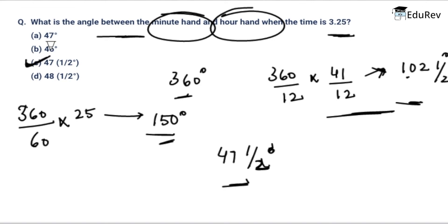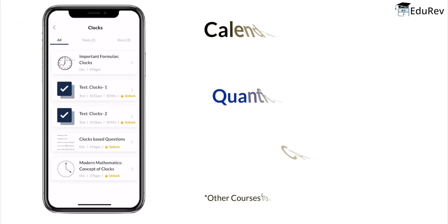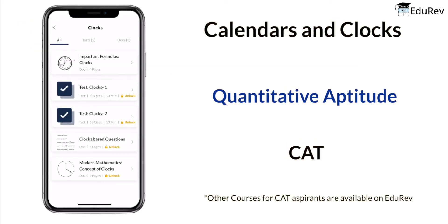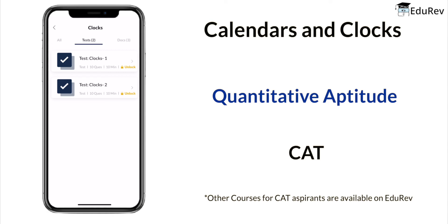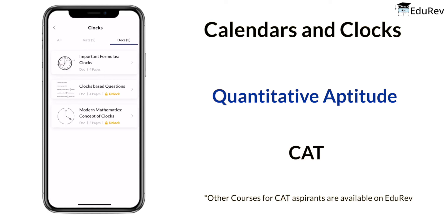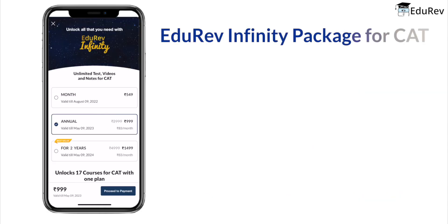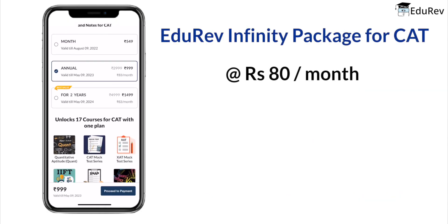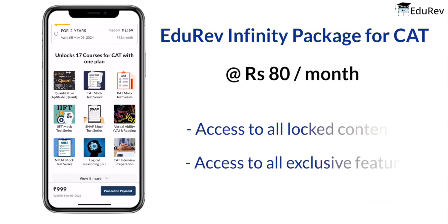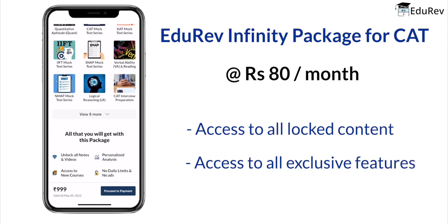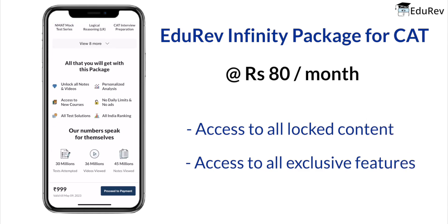I hope you have understood a little about calendars and clocks. You can go to EduRev and attend these tests to understand this chapter in depth. You can unlock all the videos, documents, and tests for CAT with the EduRev Infinity Plan and ace your exams at less than 80 rupees per month. Thank you.